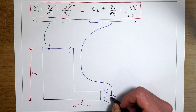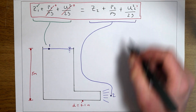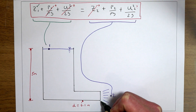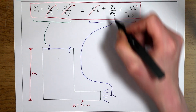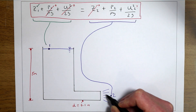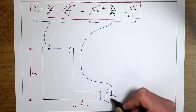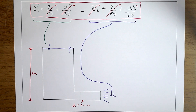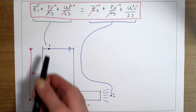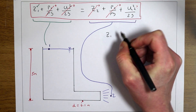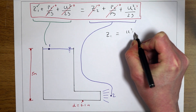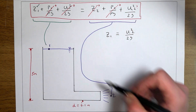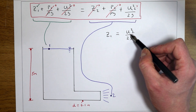At point two, the outlet of the pipe, we're trying to find the velocity. The elevation is zero because we're at the bottom of the system, so there's no potential energy. The pressure is also zero because as the water leaves the pipe it's no longer under pressure — it's at atmospheric pressure with no water above it. So between point one and point two we end up with a much simpler equation: all energy at point one is elevation, and all energy at point two is kinetic energy.